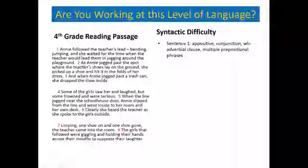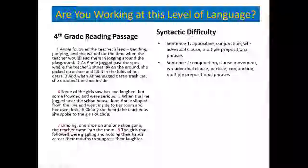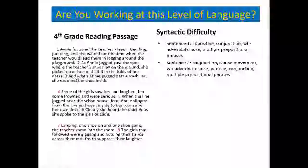Let's look at the second sentence. It starts out with 'as,' which is a conjunction, because a simple sentence starts with a noun phrase. So we know that there's been a clausal movement. 'She picked up a shoe and hid it in the folds of her dress as Annie jogged past the spot where the teacher's shoes lay on the ground.' We have a conjunction, a clausal movement, 'past' functioning as a prepositional phrase — an unusual use of that word — and another WH adverbial conjunction 'where the teacher's shoes lay on the ground.'